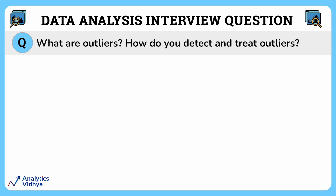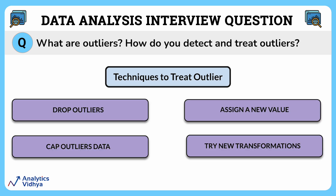To treat outliers, the first thing you can do is drop them — just delete all the records that contain outliers. The second method is capping outliers data. The third method is assigning a new value; you can assign the mean, median, or some other appropriate value to it. The fourth thing you can do is try a new transformation like normalization.